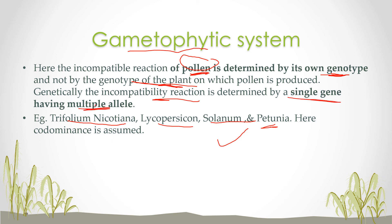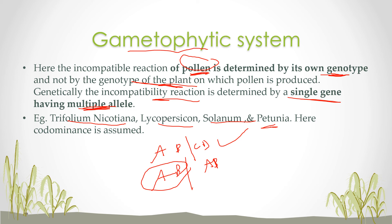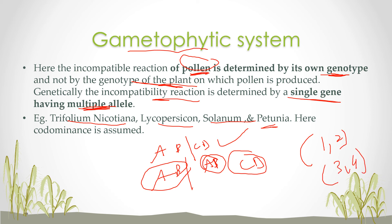Genetically, in the gametophytic system the incompatibility reaction is determined by a single gene having multiple alleles. For example, allele pair 'AB' cannot fuse with another 'AB'. Only if there is a different allele — like 'CD' — is it fully compatible. When alleles are similar, the reaction is totally or partially incompatible, as I'll explain in the next slide.